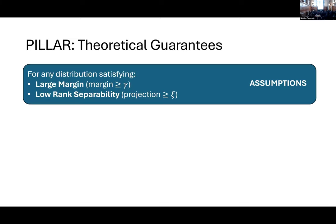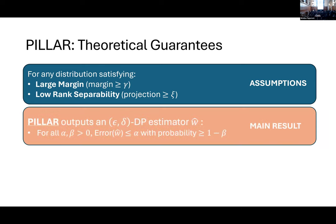The algorithm, which is very basic, allows us to obtain some theoretical guarantees. In particular, we need to make a couple of assumptions to derive these guarantees. The first assumption is that the data has large margin, we denote a lower bound on the margin as gamma. And the data also has low-rank separability, and we denote this with a symbol XI. The main theoretical result is that the algorithm of Pillar outputs an epsilon-delta DPSC meter.